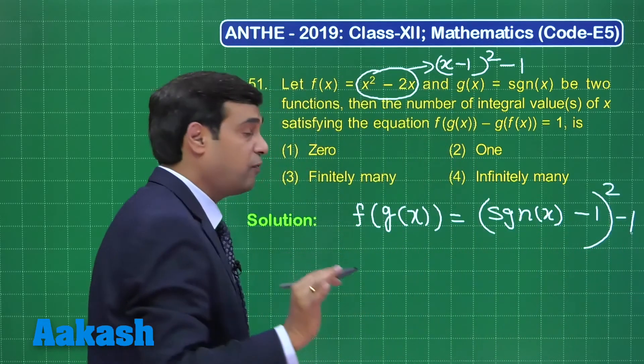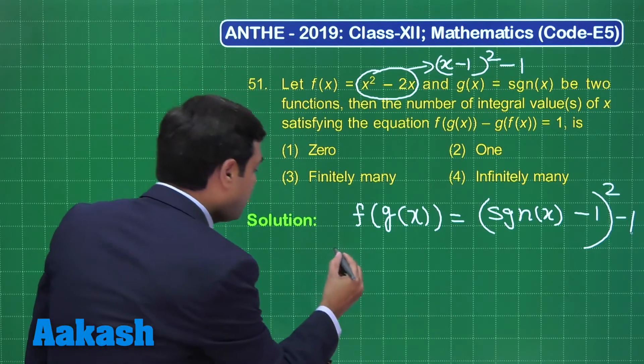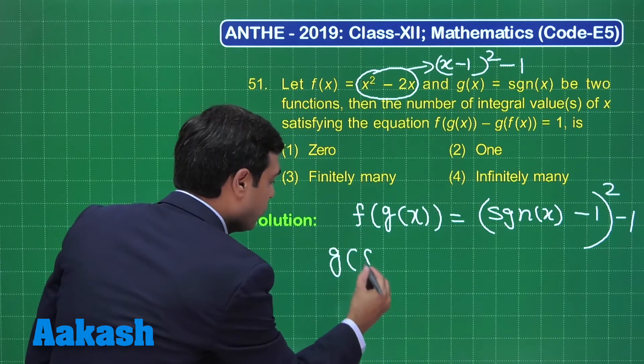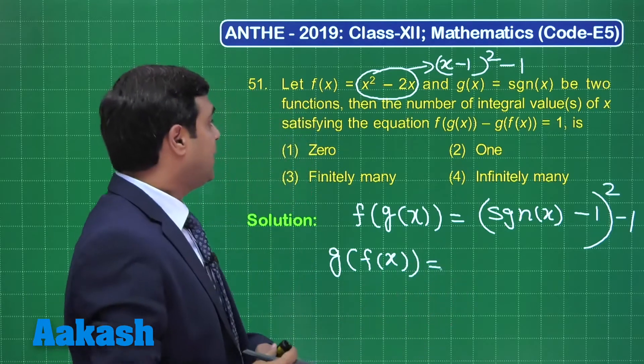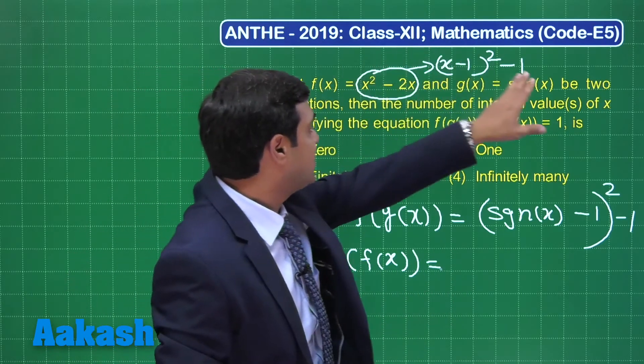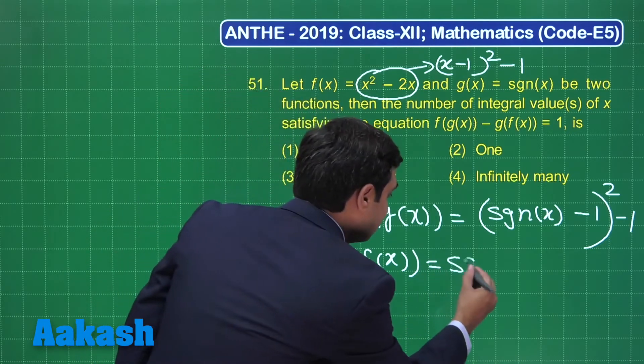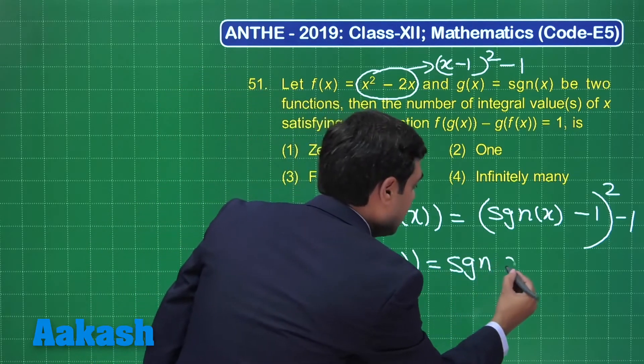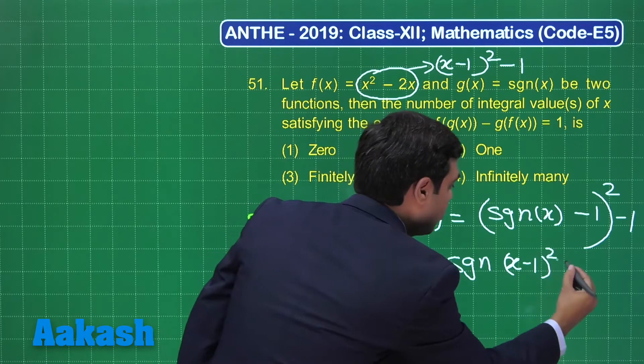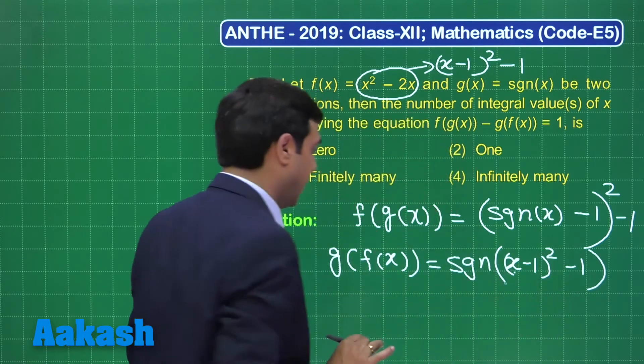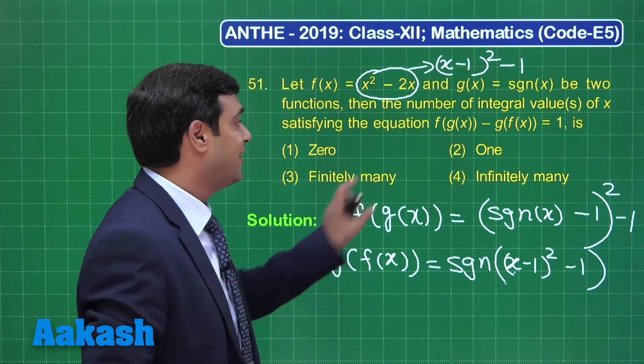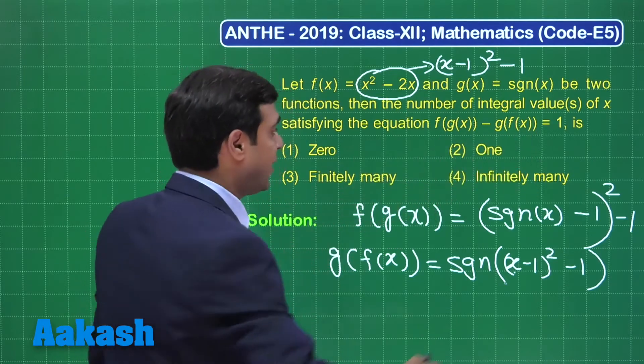This is f(x). When you talk about g(f(x)), let's check out what you are getting. g(f(x)), that is, this term is replaced here for x, so this gives you signum of (x - 1)² - 1. Subtract the two and say this is equal to one.